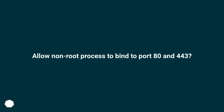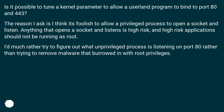Allow non-root process to bind to port 80 and 443. Is it possible to tune a kernel parameter to allow a userland program to bind to port 80 and 443? The reason I ask is I think it's foolish to allow a privileged process to open a socket and listen. Anything that opens a socket and listens is high risk, and high risk applications should not be running as root. I'd much rather try to figure out what unprivileged process is listening on port 80 rather than trying to remove malware that burrowed in with root privileges.